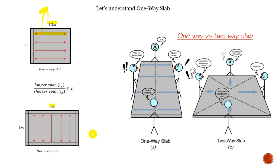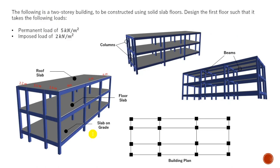This is what I just mentioned about the 3D view of our problem. I made this on ETABS, and you see here we have a slab on grid, we have floor slab, and we have roof slab as well — and this is a solid slab system because we have the beams supporting the slab. I've got this plan of my building, and I'm going to discuss about the slab on grid plus the floor slab and the roof slab in just a moment.